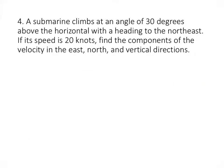For this next problem, we need to take a vector being described to us and decompose it into the cardinal directions — we need to find the different components of this vector. The submarine is climbing at an angle of 30 degrees above the horizontal and heading to the northeast, with a speed of 20 knots, which tells us the magnitude of the velocity vector s is 20.